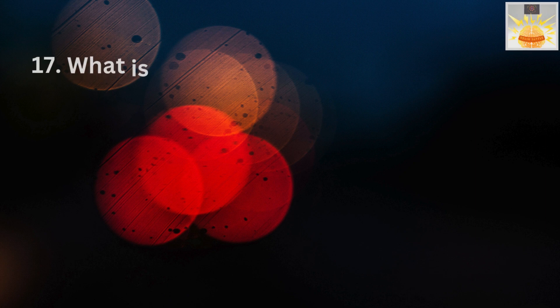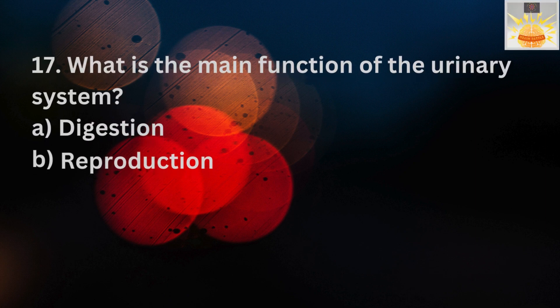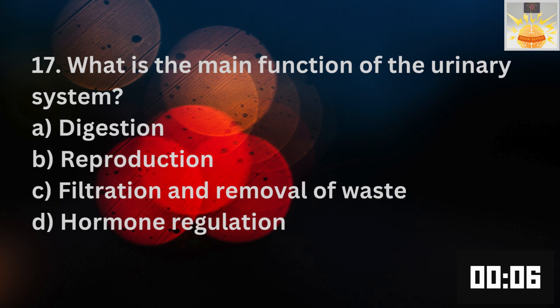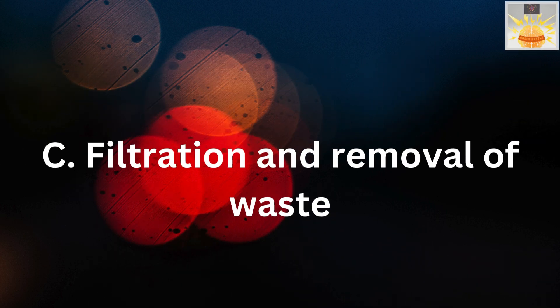Question 17. What is the main function of the urinary system? Answer options are A. Digestion. B. Reproduction. C. Filtration and removal of waste. And D. Hormone regulation. And the right answer is C. Filtration and removal of waste.